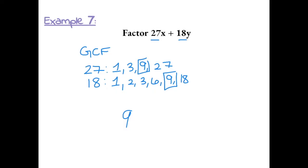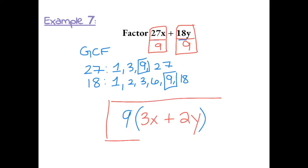So our greatest common factor always goes outside a set of parentheses when factoring. We use our greatest common factor and we divide each term by the greatest common factor. 27x divided by 9 leaves us with 3x because 27 divided by 9 is 3 and we have an x left over. Plus 18y divided by 9 is 2y. This would be the factored form of the expression 27x plus 18y.